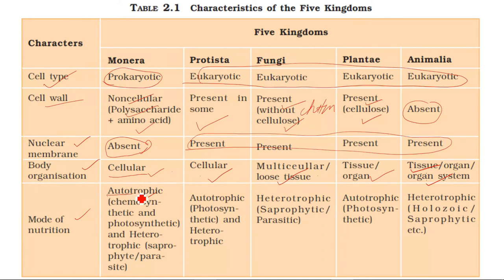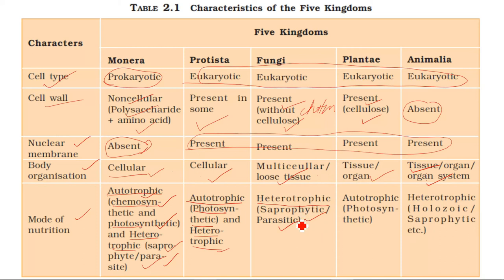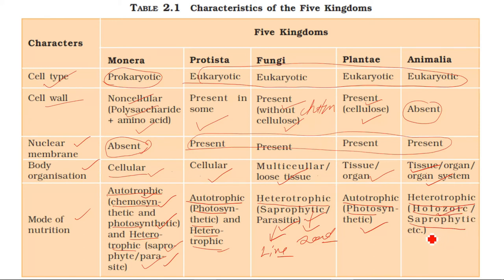Mode of nutrition: Monera can be autotrophic — either chemo-synthetic or photosynthetic — or heterotrophic. Protista can be autotrophic or heterotrophic. Fungi are heterotrophic — saprophytic, feeding on dead and decaying matter, or parasitic, dependent on a living organism. Plantae are autotrophic and photo-autotrophic. Animalia are heterotrophic — they feed by holozoic mode, ingesting solid food.